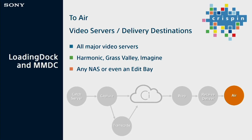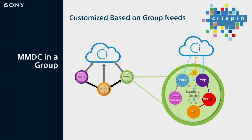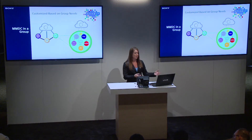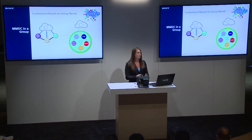What does this mean in an MMDC group solution? Each station has the capability to do all of these functions, and it's really mandated by you and your station group on how you want to utilize each location. Each location has the opportunity to capture content, prep it, push it to air, push dock to dock to another local station, or up to the cloud. You have a lot of flexibility and power behind this solution to fit what your station group needs are — we're not dictating workflow.